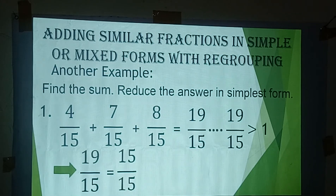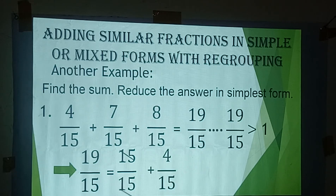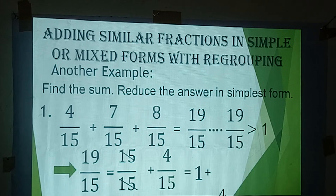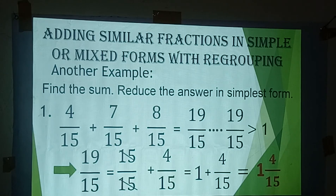Since 19 over 15 is greater than 1, let me regroup: 19 over 15 equals 15 over 15 plus 4 over 15, which equals 1 plus 4 over 15, giving us 1 and 4/15. That is the final answer, since 4 and 15 have no common factor.